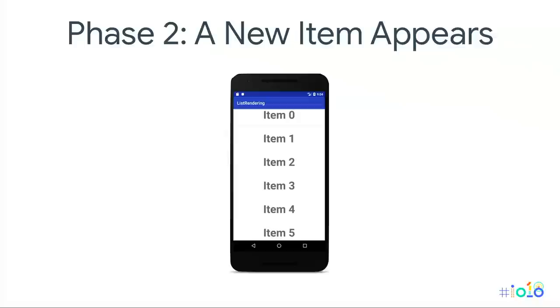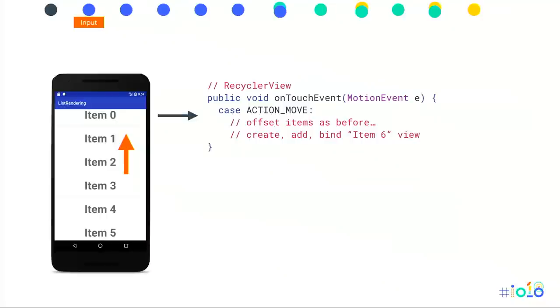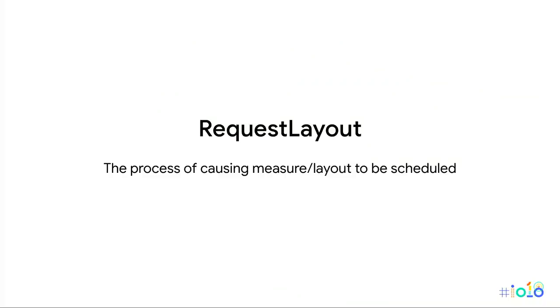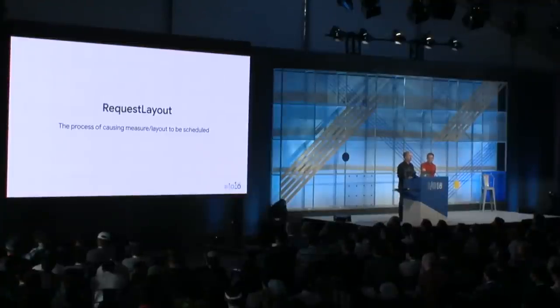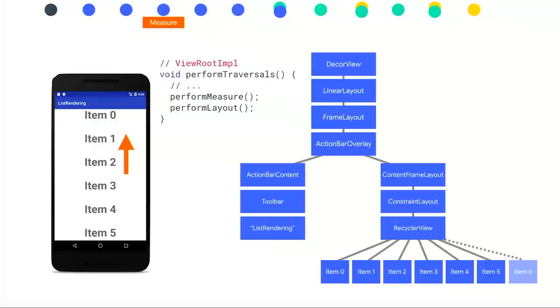Now the second phase: the user keeps dragging and a new item appears at the bottom. VSync, we process input, and we know the user has moved enough to trigger creation and binding of a new item. That ends up in code where we add a view to the parent — the RecyclerView gets a new view and calls requestLayout. requestLayout is like invalidation, but instead of saying 'I need to be redrawn,' it says 'I need to be remeasured and re-laid out.' This propagates all the way up the tree, and then we do measure and layout on the entire tree to see what changed.